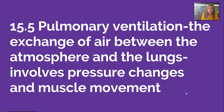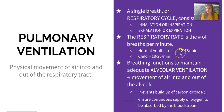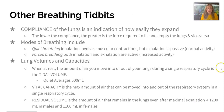Section 15-5 digs deeper into pulmonary ventilation — the physical movement of air into and out of the respiratory tract. A single respiratory cycle consists of inhalation or inspiration and exhalation or expiration. The respiratory rate is the number of breaths per minute; normal adults breathe 12–18 times per minute while children breathe 18–20 times per minute. Breathing functions to maintain adequate alveolar ventilation, preventing buildup of carbon dioxide and ensuring a continuous oxygen supply. Compliance of the lungs indicates how easily they expand — lower compliance requires greater force to fill and empty them.